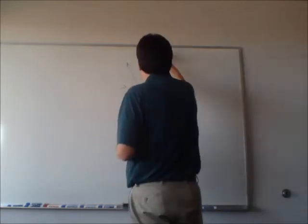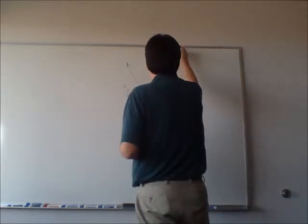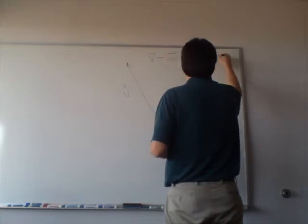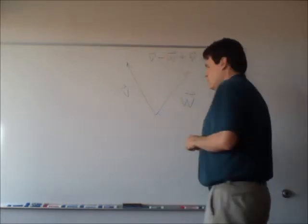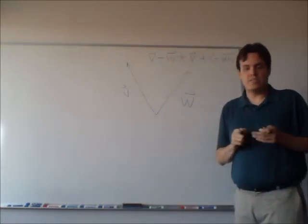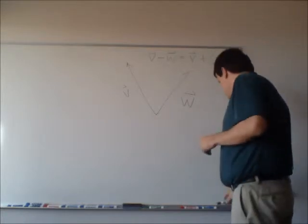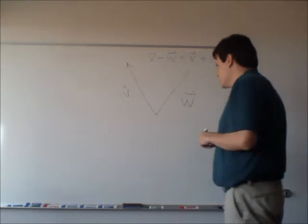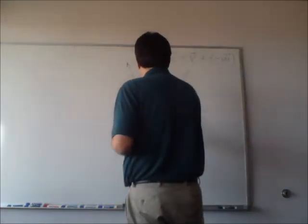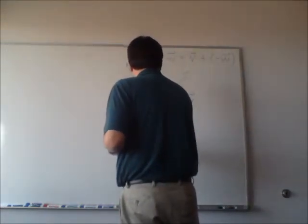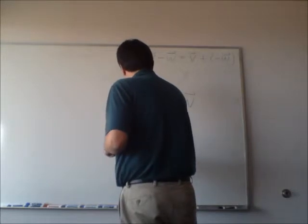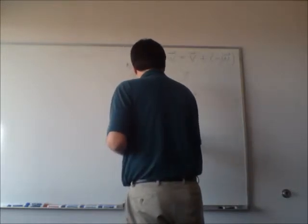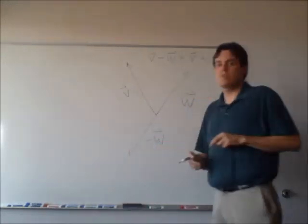Okay, so again, V minus W equals V plus the opposite of W. You probably already know what the opposite of W is going to look like. That's going to be a vector that has the same length as W, just in the opposite direction. So that's the opposite of W there.